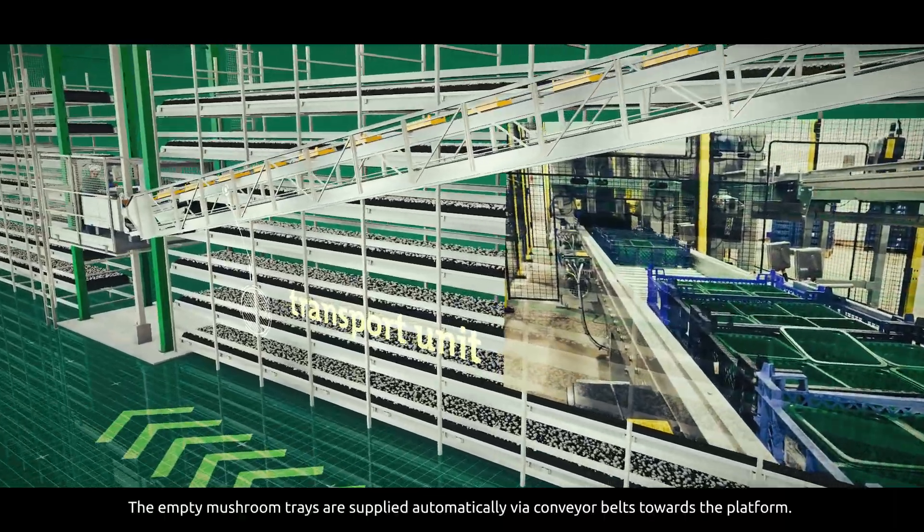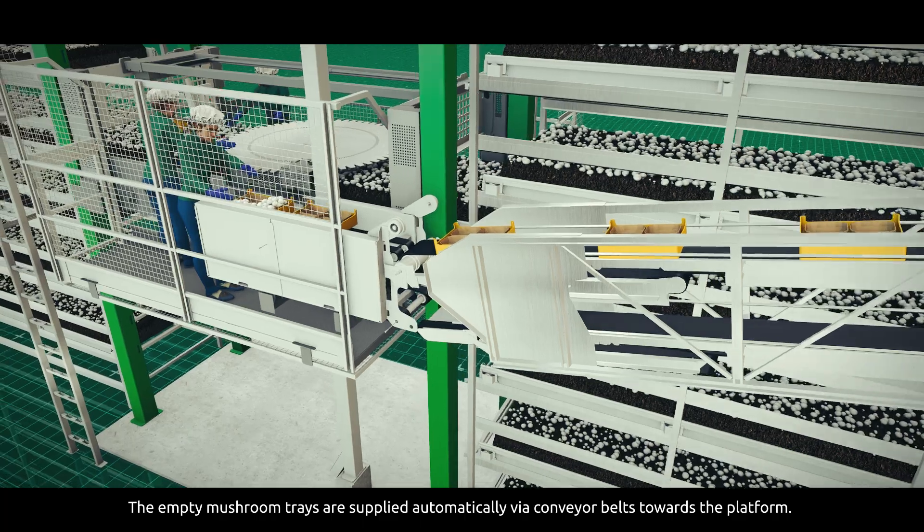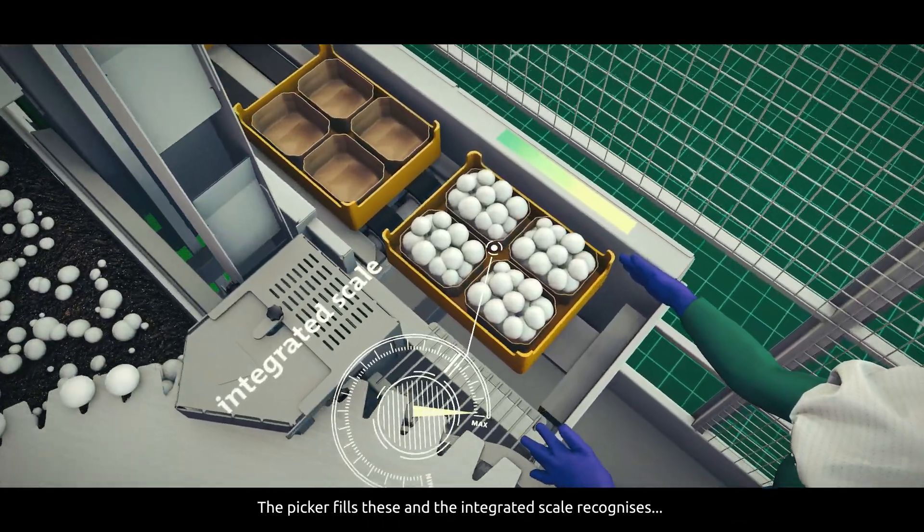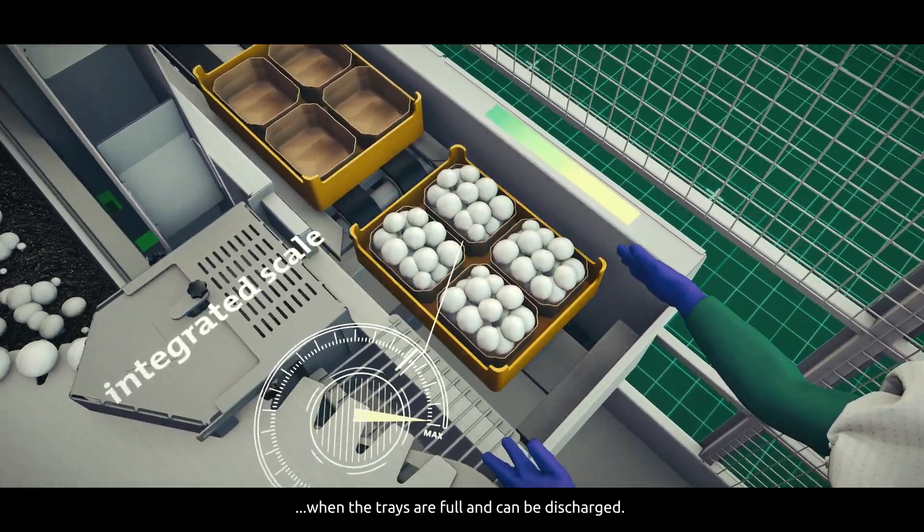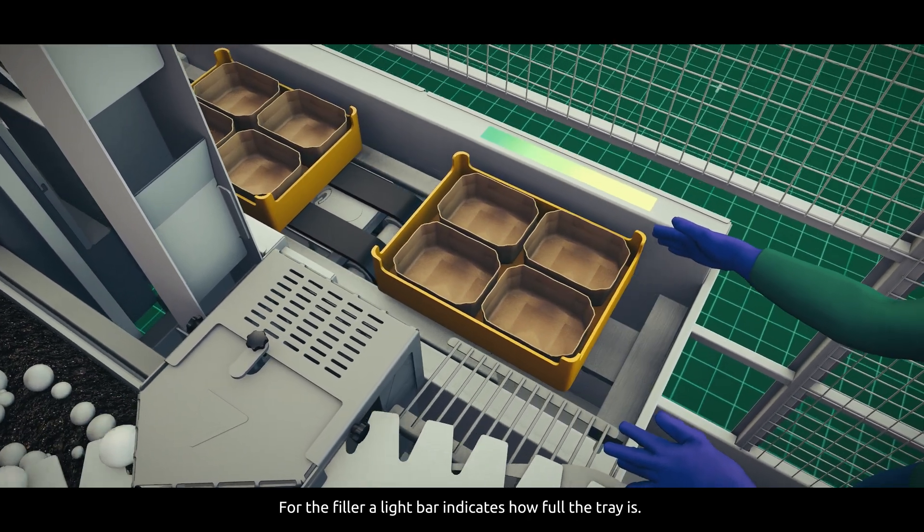The empty mushroom trays are supplied automatically via conveyor belts towards the platform. The picker fills these, and the integrated scale recognizes when the trays are full and can be discharged. For the filler, a light bar indicates how full the tray is.